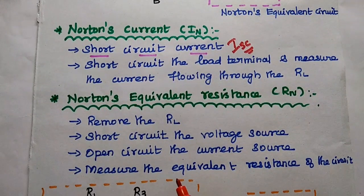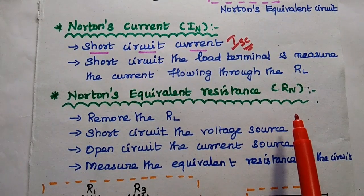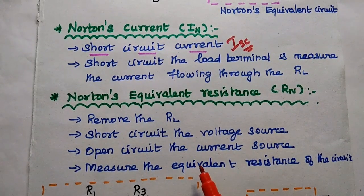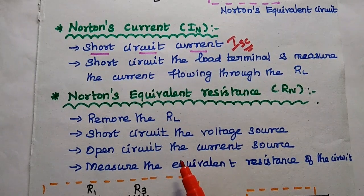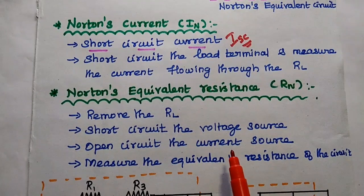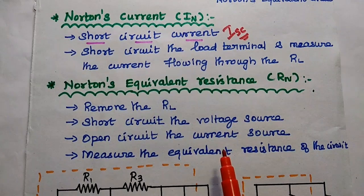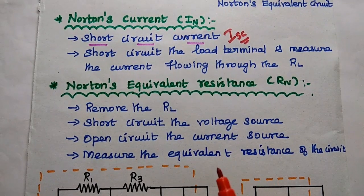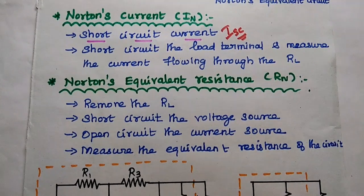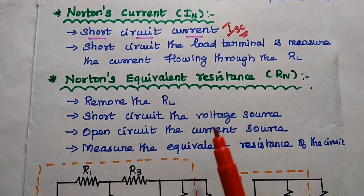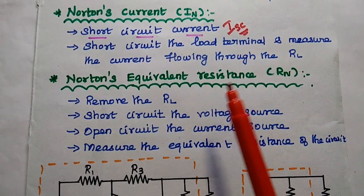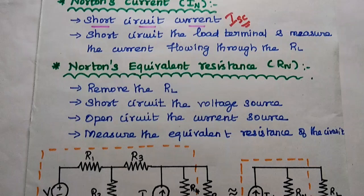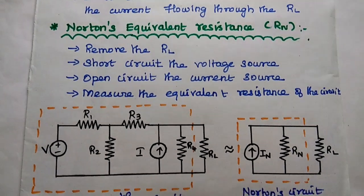Next, Natan's equivalent resistance, that is Rn. To find it, we remove the load resistor and inactivate all the sources — short circuit the voltage source and open circuit the current source present in the circuit — and then measure the equivalent resistance of the circuit. So we need to find out Natan's current (short circuit current) and the equivalent resistance, and finally draw Natan's equivalent circuit.